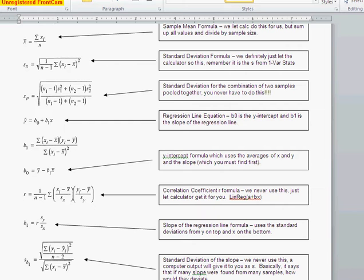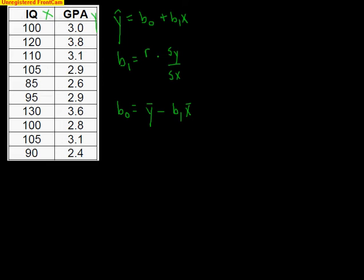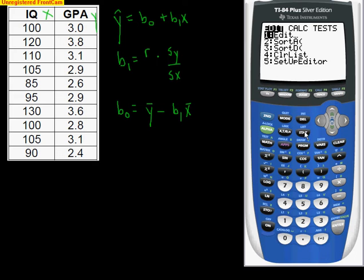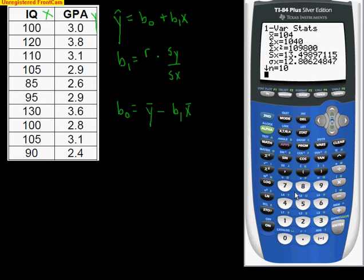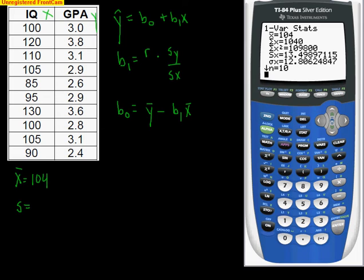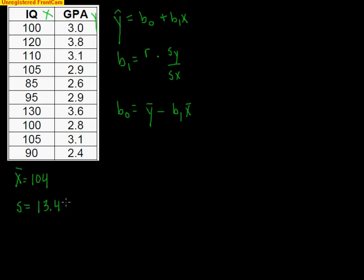So let me quickly show you exactly how we're going to do that. The first thing we need to do is get our averages for both lists and our standard deviations. If we do a stat, slide over to calc, we want to calculate the one variable stats of list one. This is going to be for the IQ. We notice that we had an average IQ of 104, and the standard deviation was 13.4990.